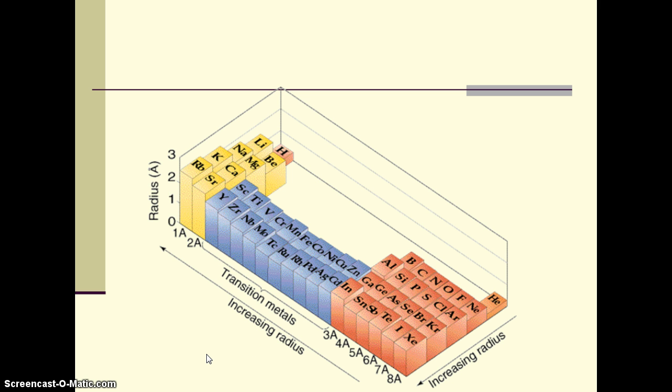This image shows how radii measured in angstroms change as we move across the periodic table. We can see that trend. The lower left, rubidium on this little periodic table, has the largest atomic radii, and the smallest atomic radii are at the top right.